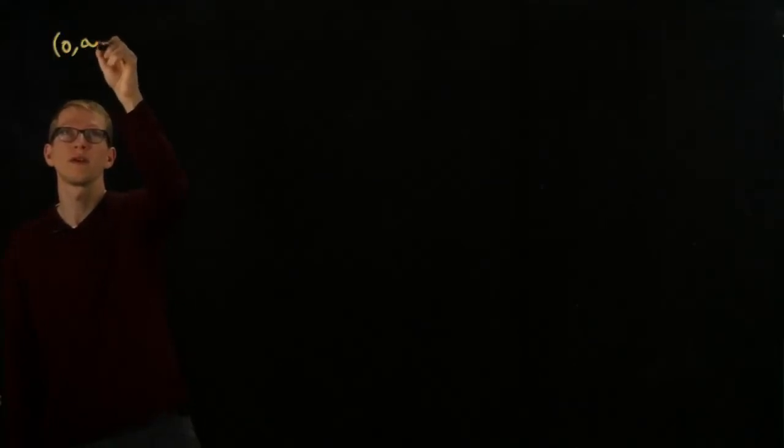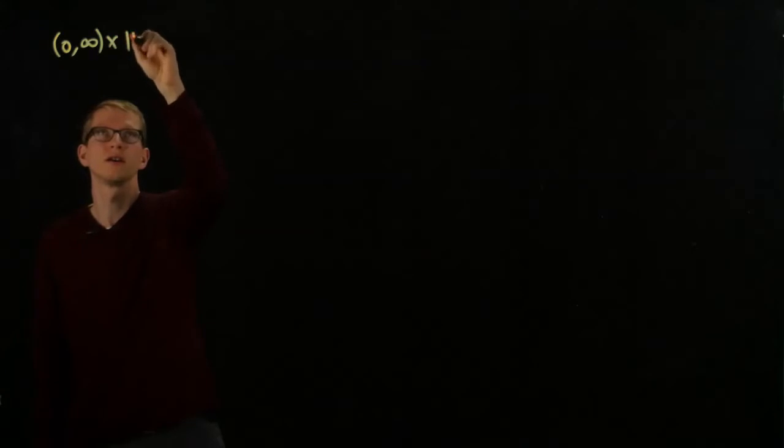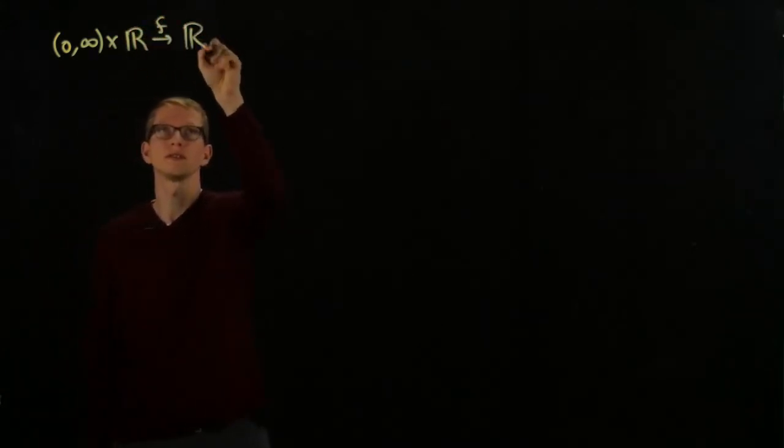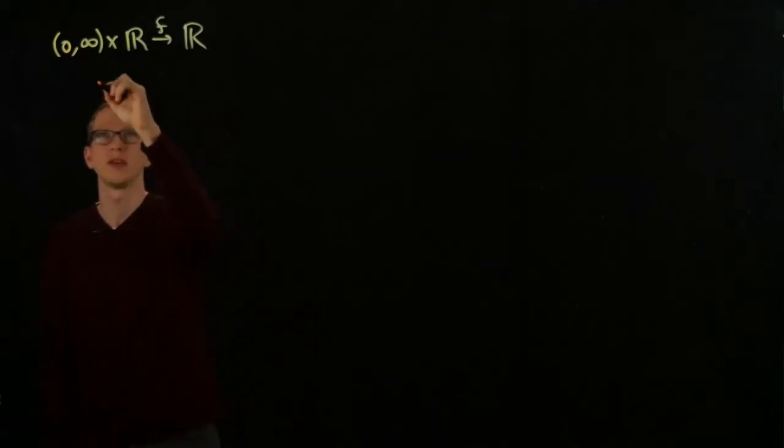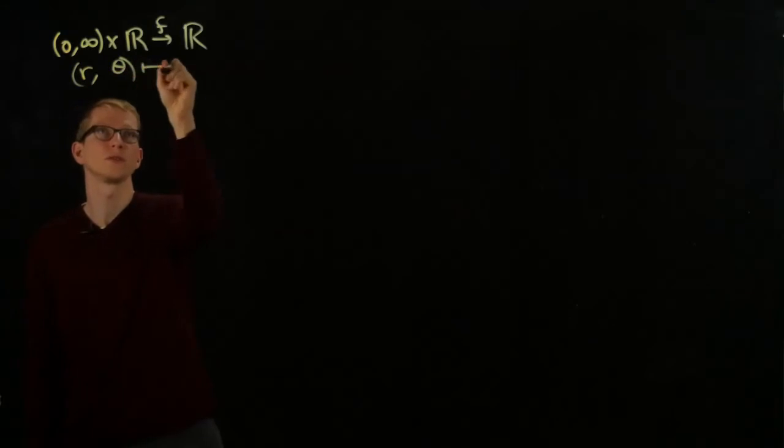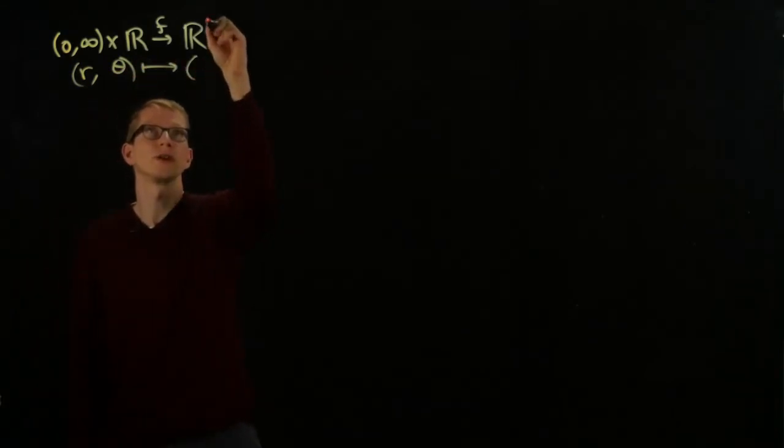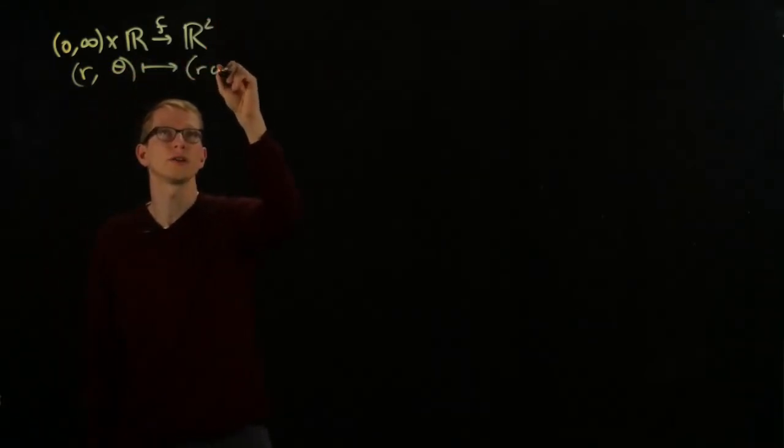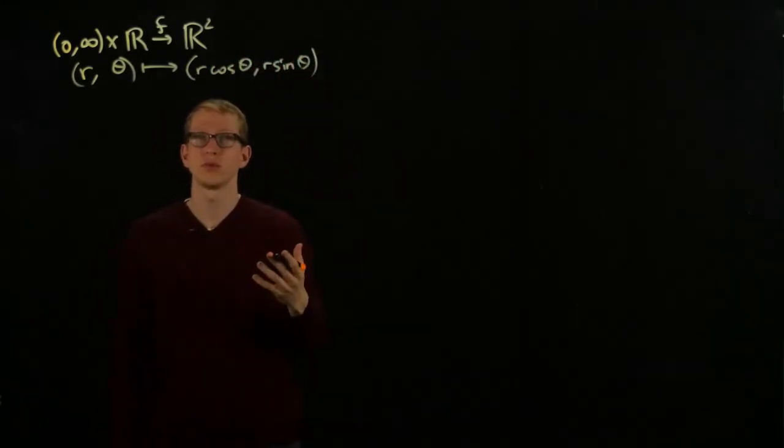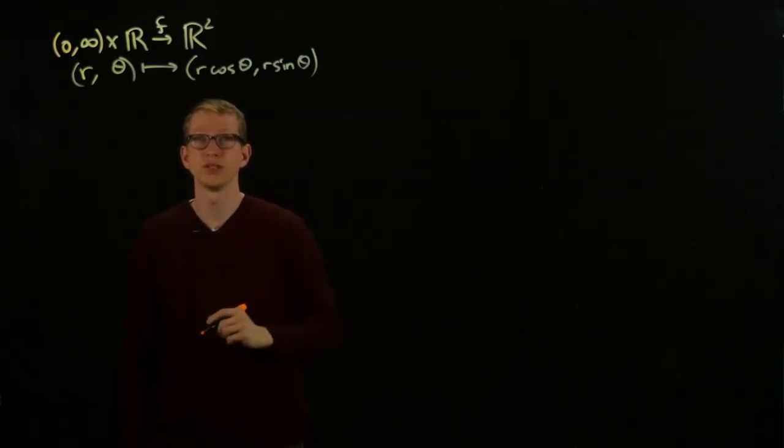Let's now use the chain rule to give a simple example of how to differentiate functions. Consider the function on this domain to R, a function of two variables given by sending (r, θ) to, or rather R², to (r cos θ, r sin θ). In this example, we'll illustrate how to differentiate this function.